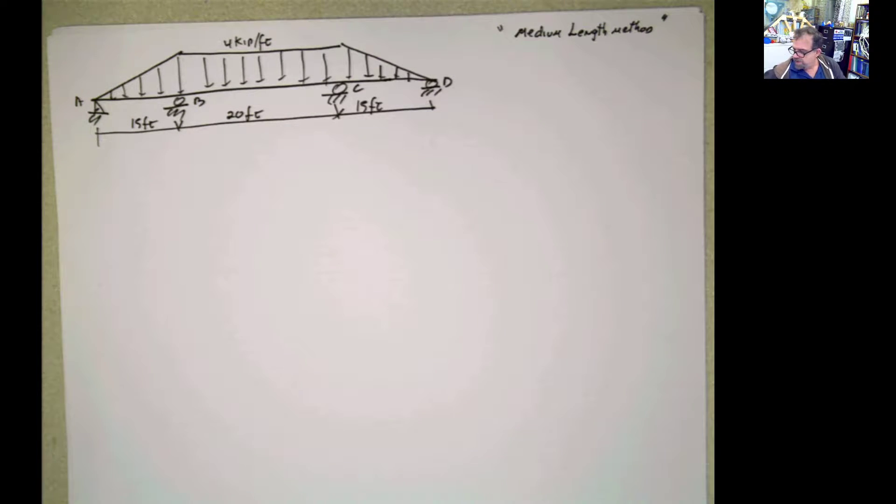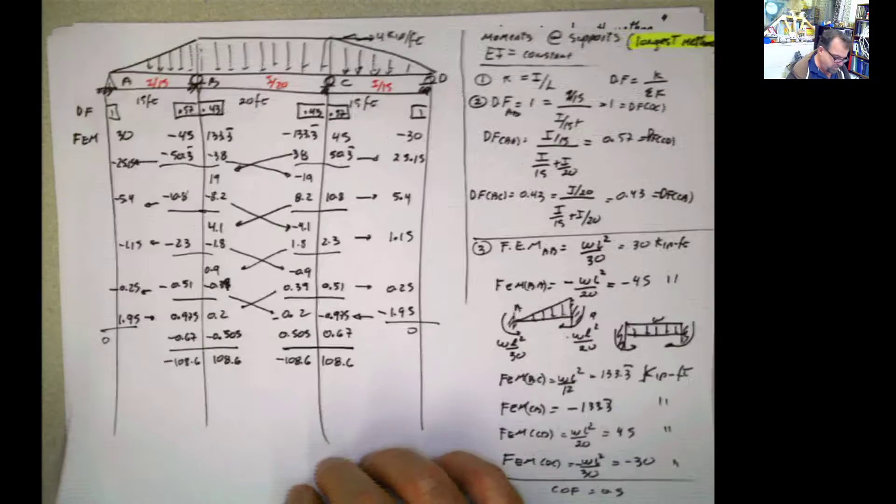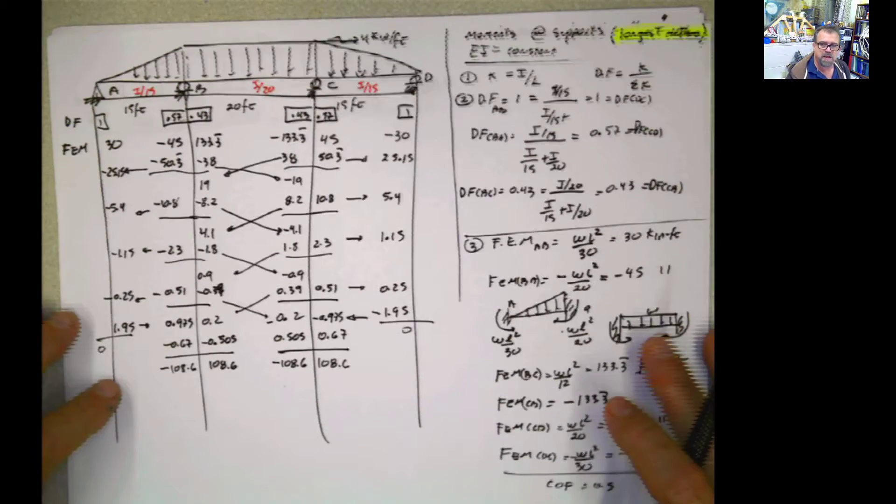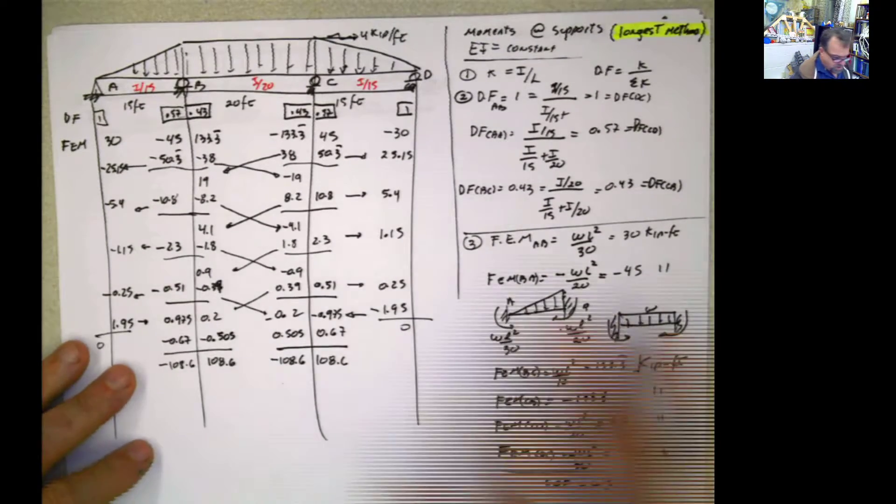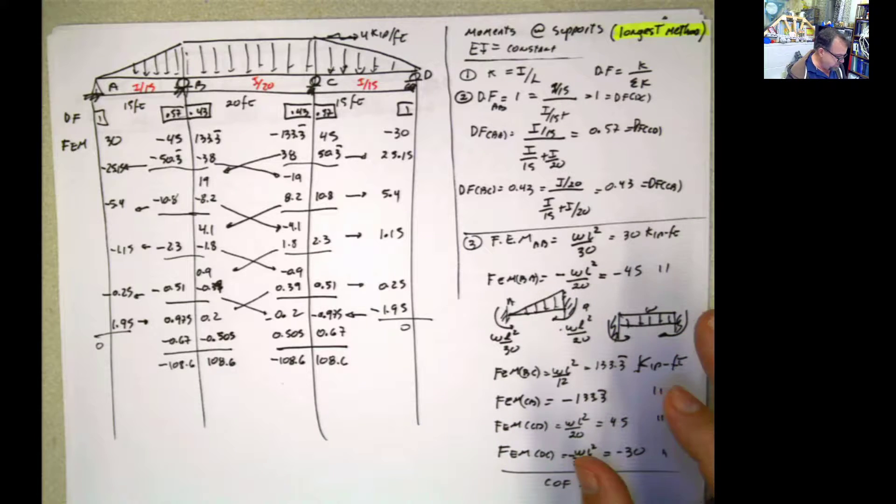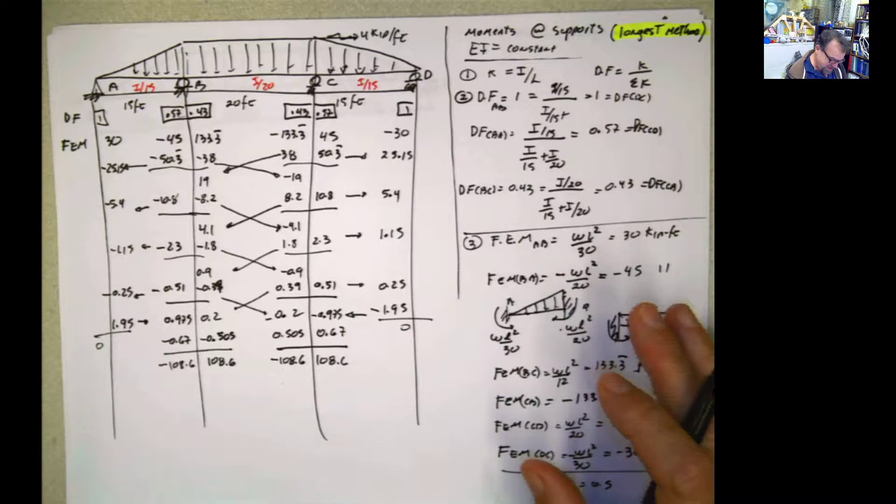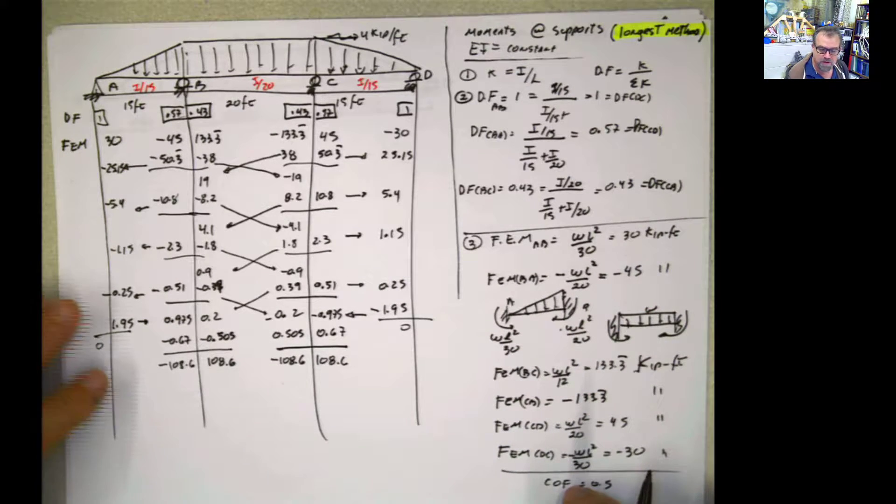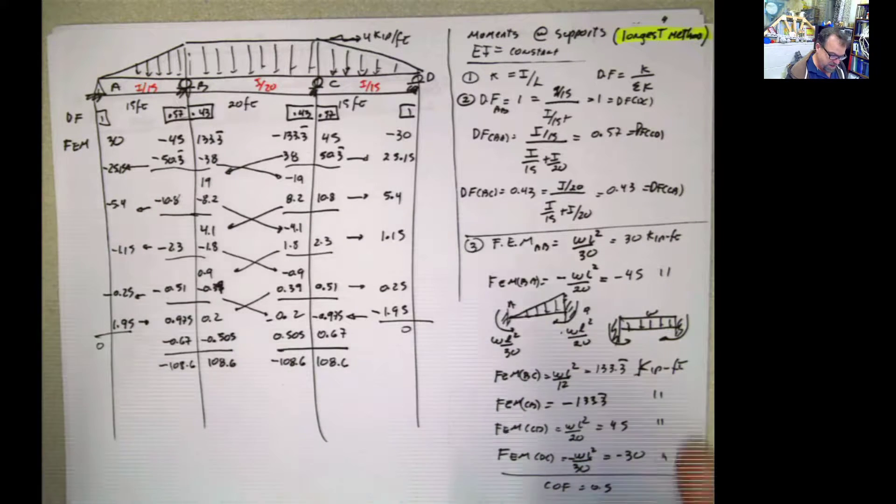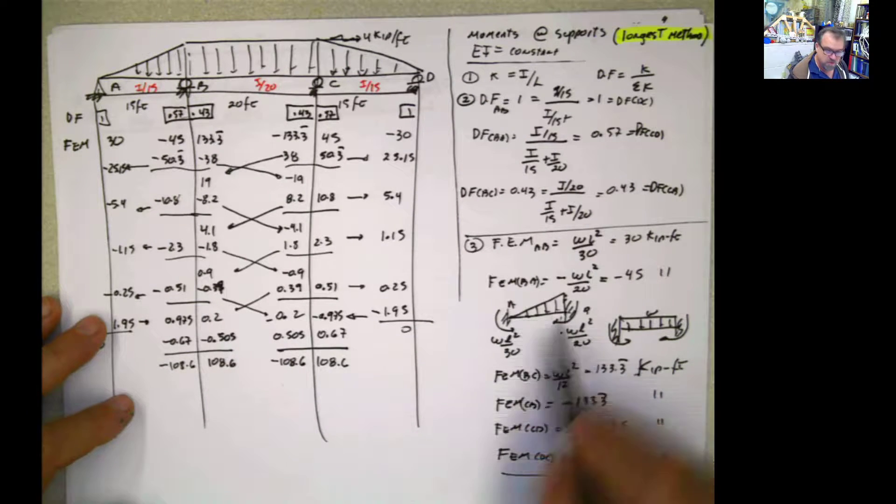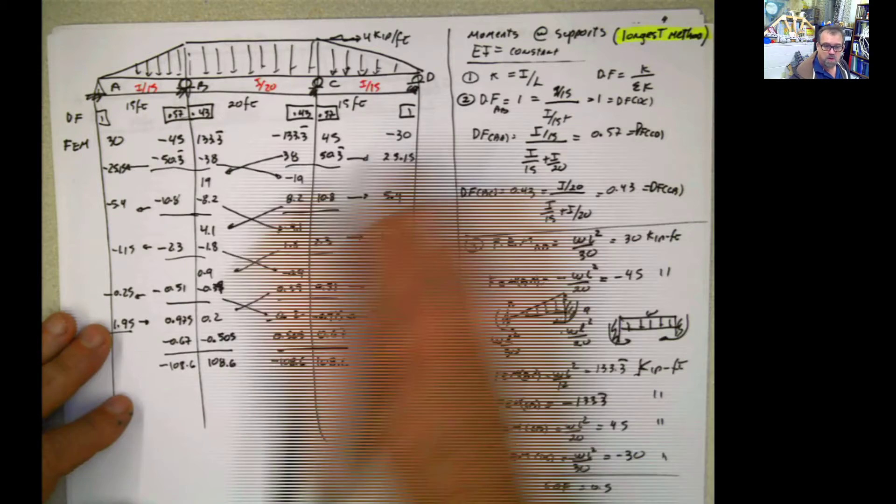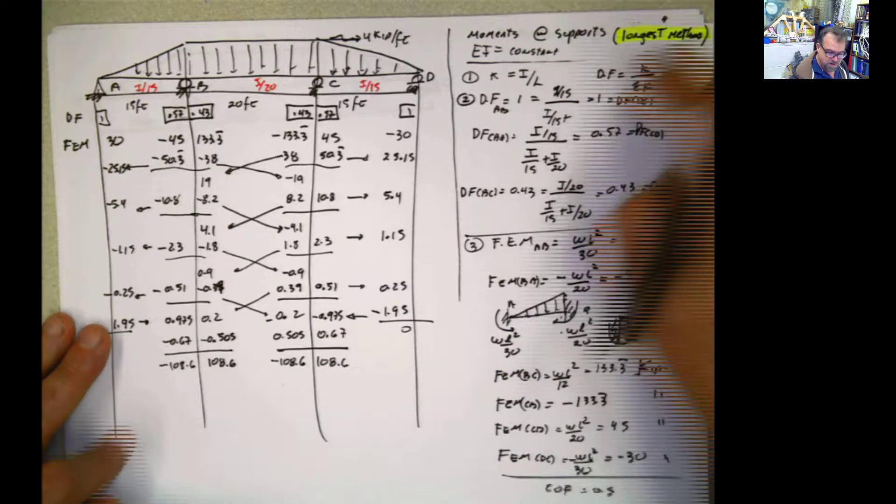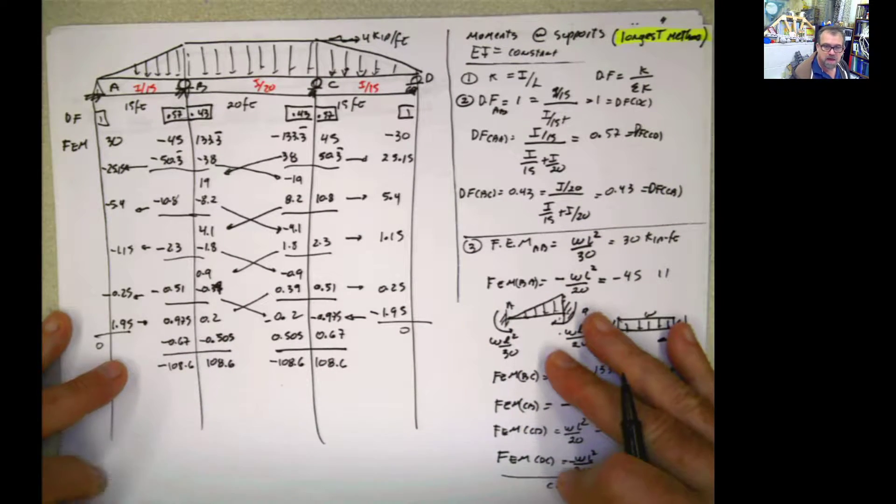Hi again. Here we are. So in the previous video, we did this and considered everything. We didn't do any simplification. We didn't modify any k. We considered the carry-off factor 0.5, still considered both ends to be fixed. The problem was short. I call this the longest method in length calculations.